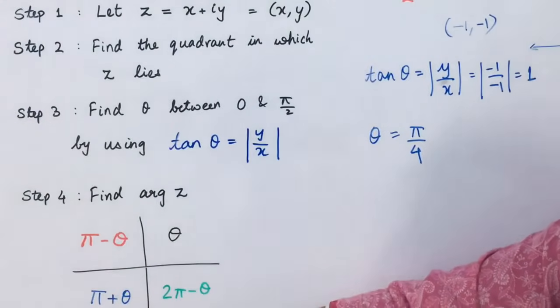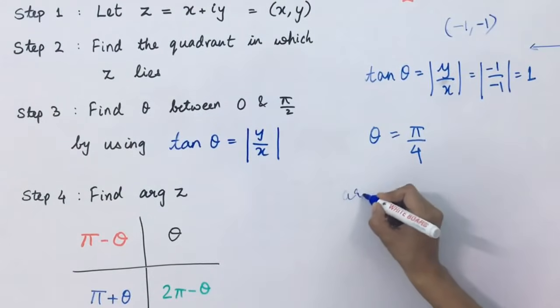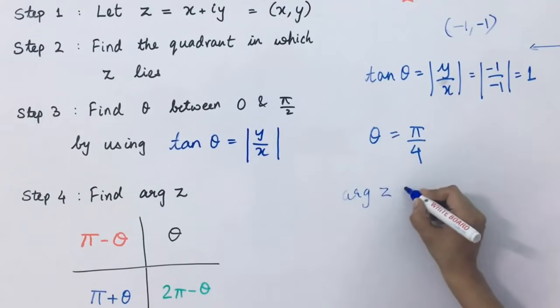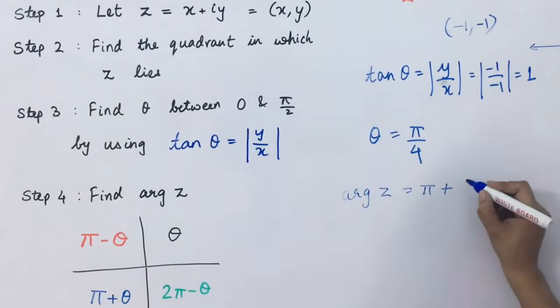The value of theta is equal to pi upon 4. It will be pi plus theta. So, we can write it. Argument z equals pi plus theta. What is theta equal to pi upon 4? And this will be equal to 5 pi upon 4.